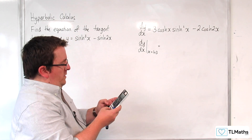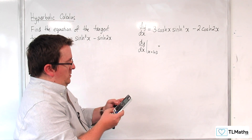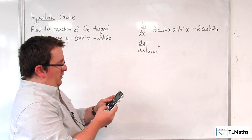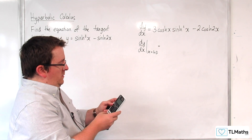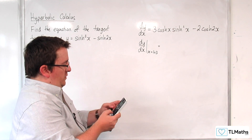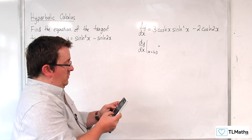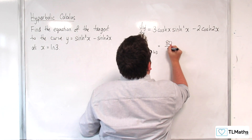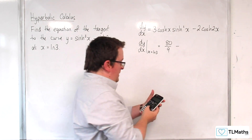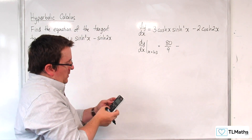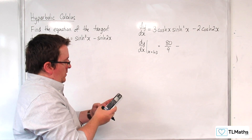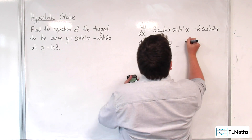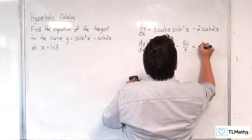So we've got 3 times cosh(ln 3) times sinh²(ln 3). It takes a few button presses to get this right. That gives 80/9 from that part, then we're taking away 2·cosh(2·ln 3), which gives 82/9.